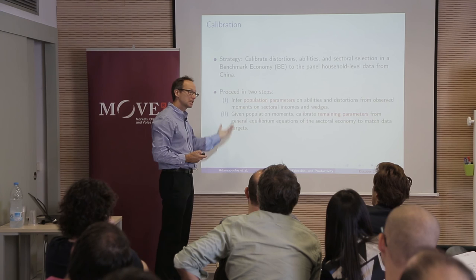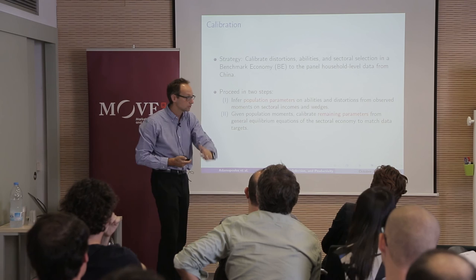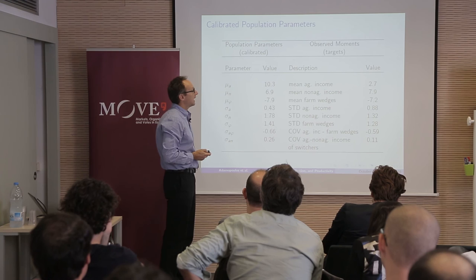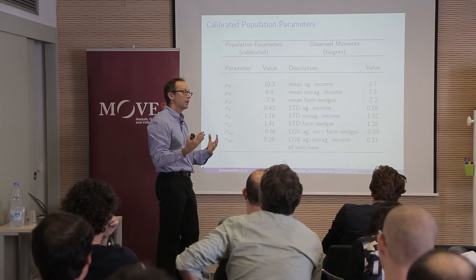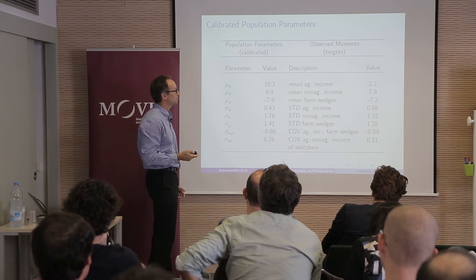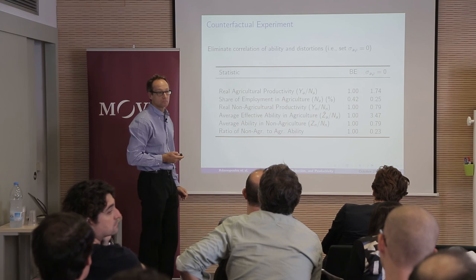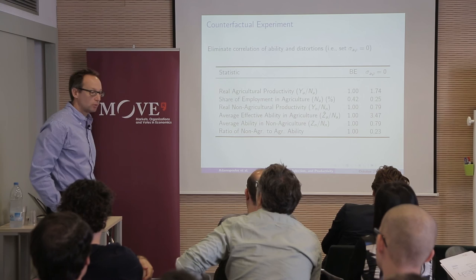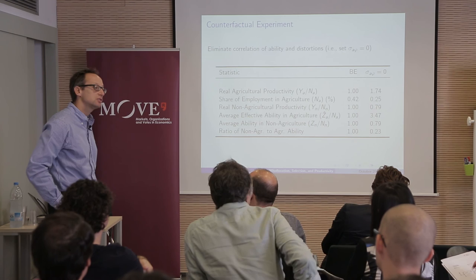It's a calibration, and we're going to exploit the panel dimension — we have data on switchers from agriculture to non-agriculture that we can use. We find that this correlation is positive, about 35%, and that the dispersion of abilities in non-agriculture is larger than in agriculture. Moreover the effective abilities in agriculture are much less dispersed. The switchers who move to non-agriculture are more educated and in general had maybe fewer use rights, so they were operating smaller farms.